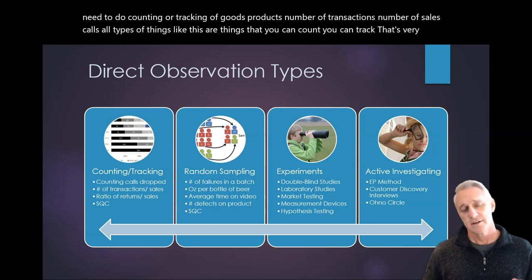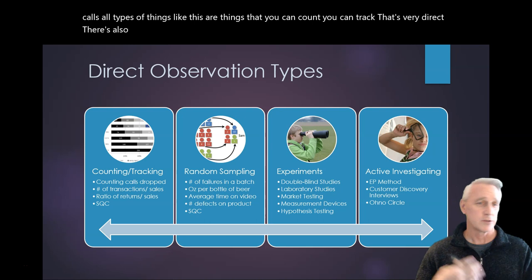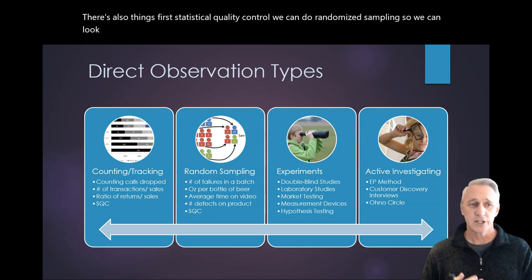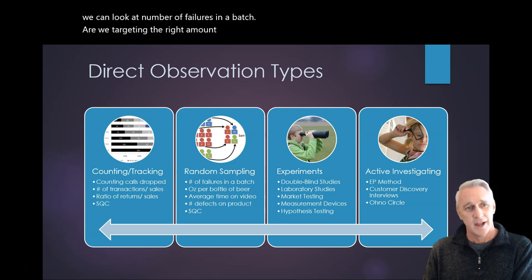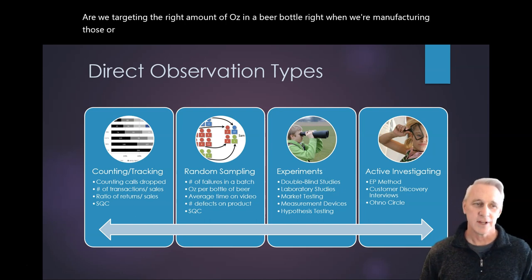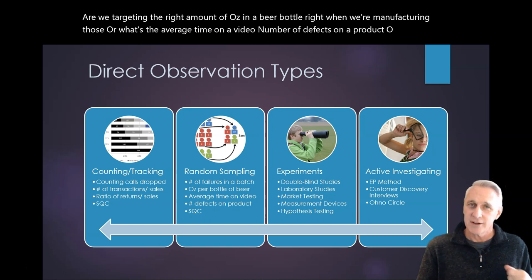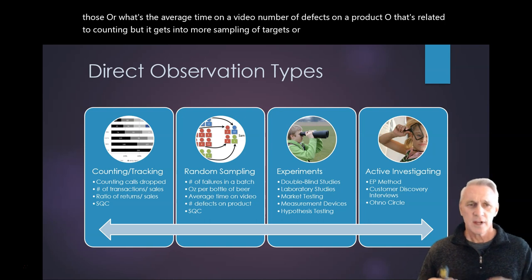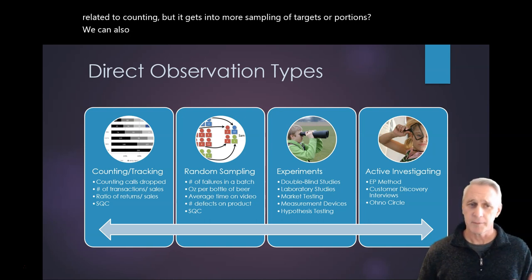There's also things for statistical quality control. We can do randomized sampling. So we can look at number of failures in a batch. Are we targeting the right amount of ounces in a beer bottle, right, when we're manufacturing those? Or what's the average time on a video, number of defects on a product. So that's related to counting, but it gets into more sampling of targets or portions.